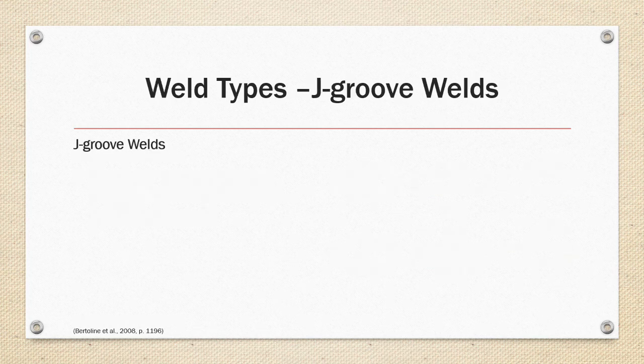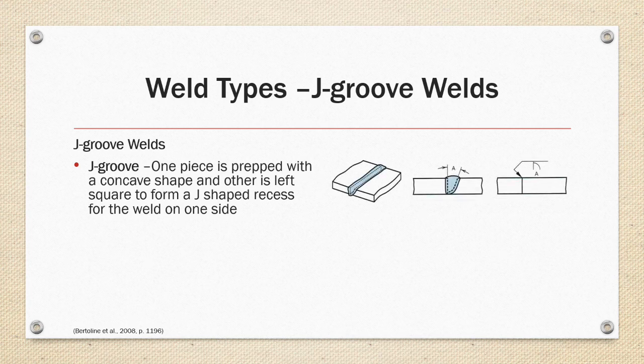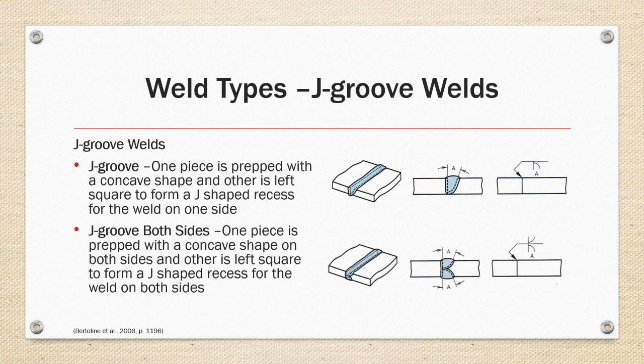J-groove welds: a J-groove weld is similar to a U-shape weld, but one piece is prepped with a concave shape and the other is left square, forming a J-shape recess for the weld on one side. In a J-groove on both sides, one piece is prepped with a concave shape on both sides and the other is left square, forming a J-shape recess for the weld on both sides of the part.